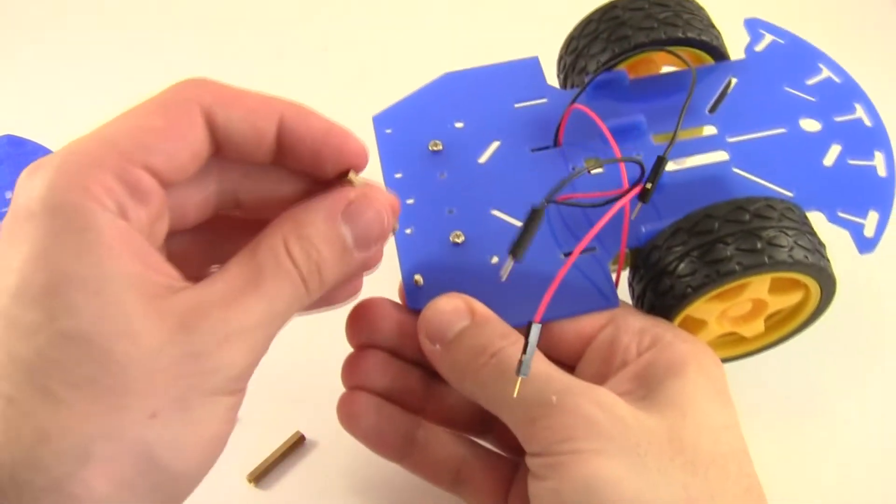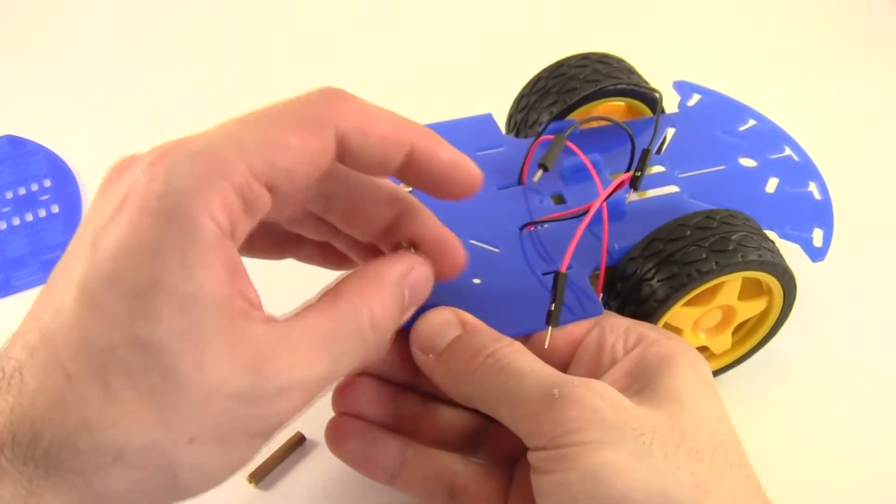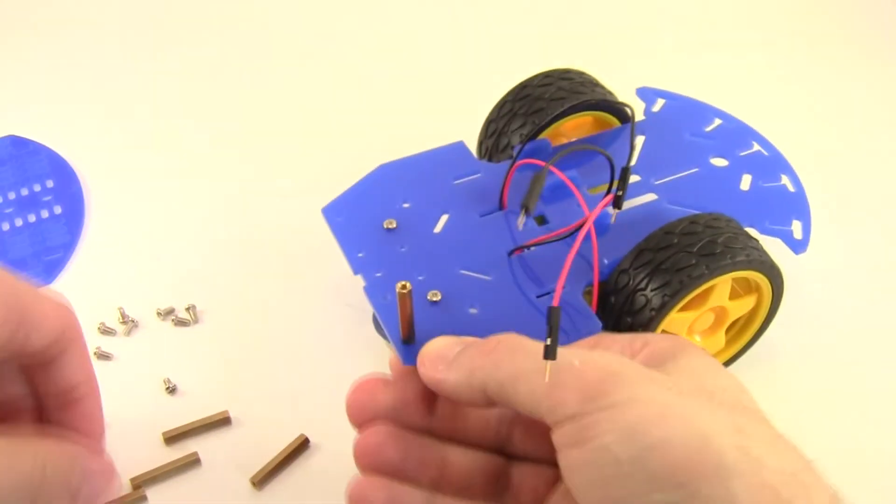So it doesn't really matter what order you do this in, but just one at a time, stick the screws through the bottom plate and then thread the standoffs on top of them.